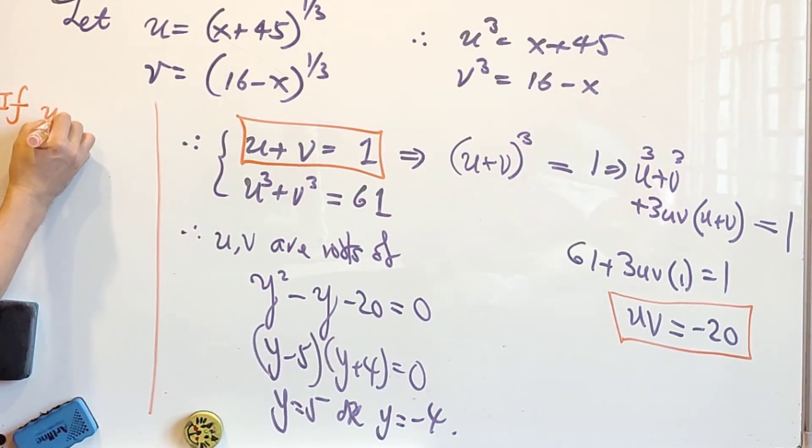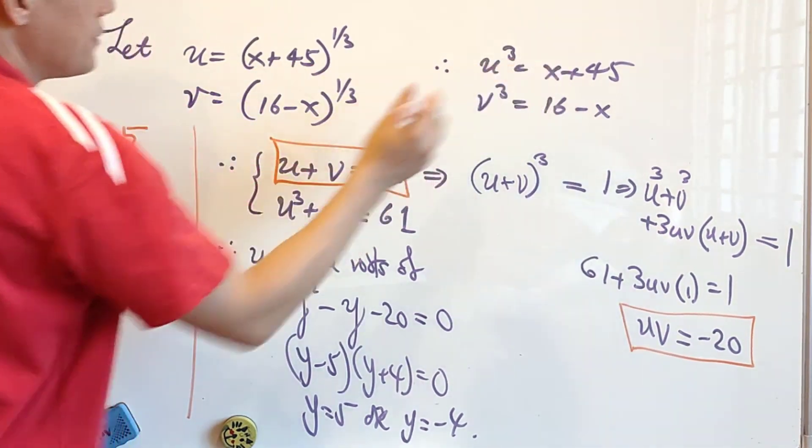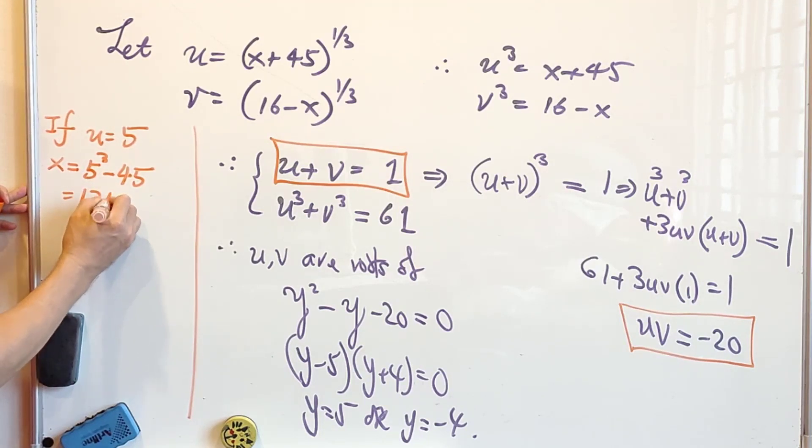If u is equal to 5, then x will be equal to 5 power 3 minus 45. That is 125 minus 45. That is equal to 80.